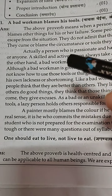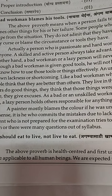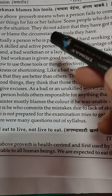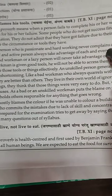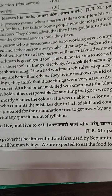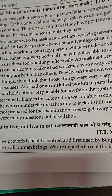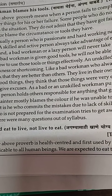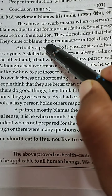Now let us look at 'A bad workman blames his tools.' That is the proverb in our text and we can explain it. The above proverb means when a person fails to complete his or her work, he or she blames other things for his or her own failure. There are many persons who fail at their work and blame other things for that failure.